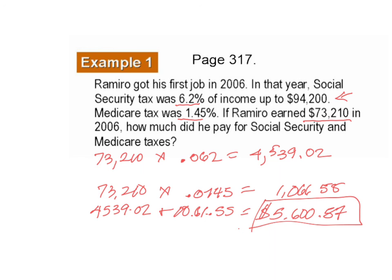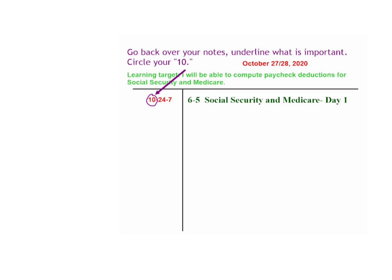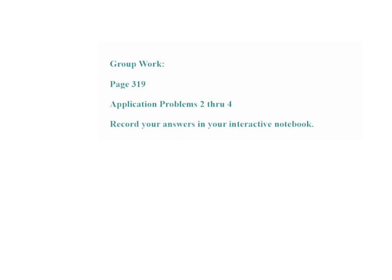Get that down in your journals, and we will go to our next slide. If you're watching at home, you can stop the video and start it when you're ready. Go over your notes, underline what's important, circle the 10 in your left-hand column, and here is a copy of today's assignment. It's page 319, Application Problems 2 through 4. However, as you know, our assignment is in Canvas — it will be assignment number 11 for this week. Thank you, have a great day. We'll see you next time.